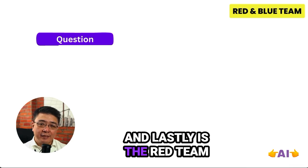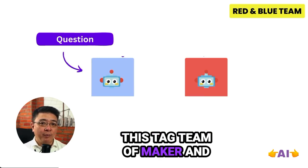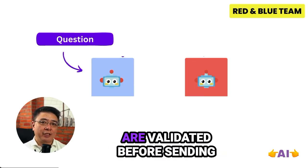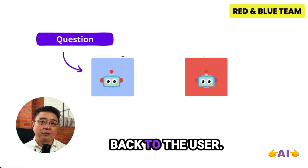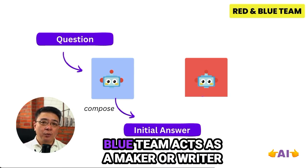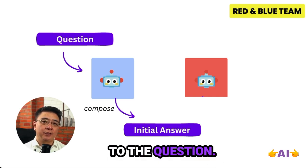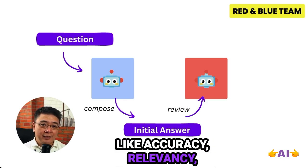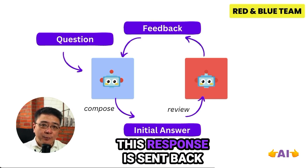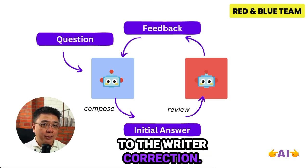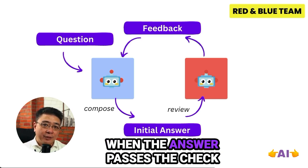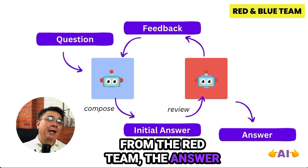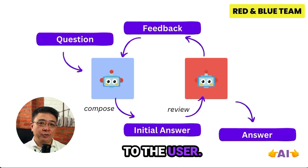Lastly is Red Team Blue Team. This tag team of maker and checker ensures that answers are validated before being sent back to the user. The Blue Team acts as the maker or writer to generate the initial response to the question. Then the Red Team checks the response against several factors like accuracy, relevancy, toxicity, and more. This response is sent back to the writer for correction, and when the answer passes the Red Team's check, it is finalized and returned to the user.